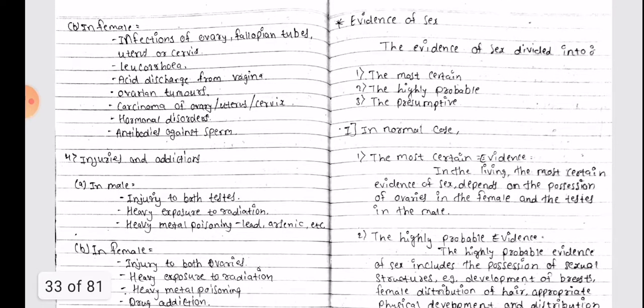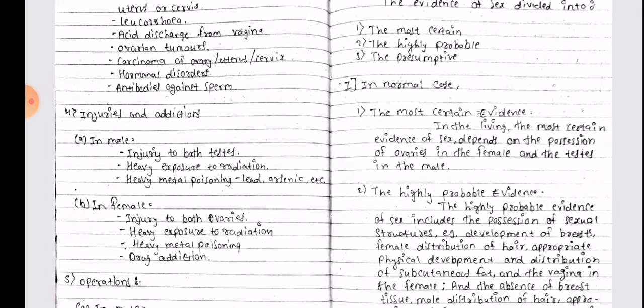In female - infections of ovary, fallopian tubes, uterus or cervix, glycosuria, acid discharge from vagina, ovarian tumors, carcinoma of ovary, uterus, cervix, hormonal disorders, antibodies against sperm.